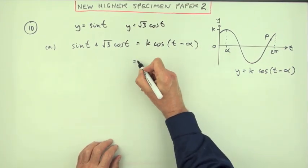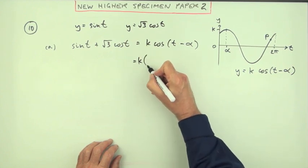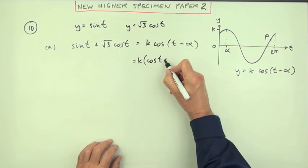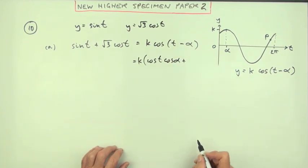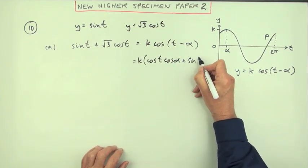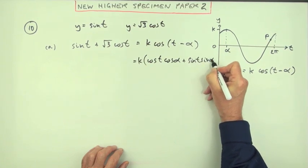What we'll do is expand this part. That'll be k times cos t cos alpha - you just look up the front to check, remember it switches with the cosine one - plus sine t sine alpha.